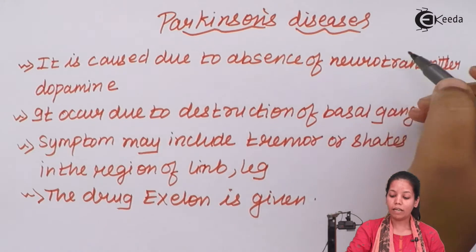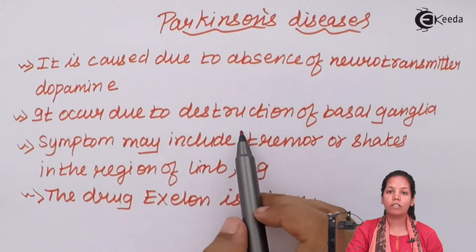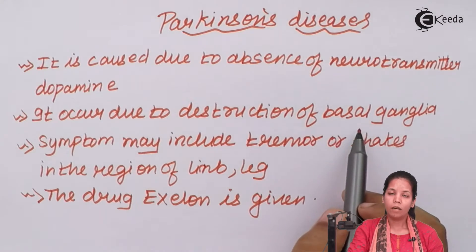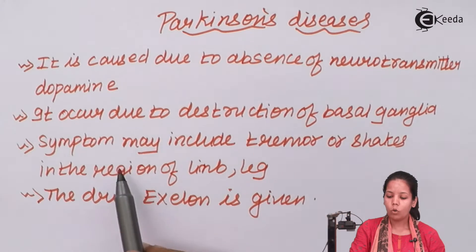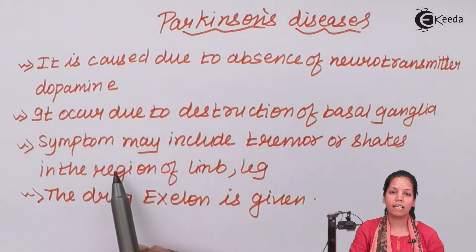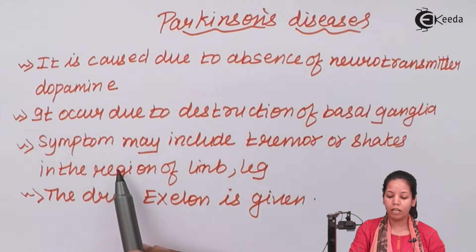Parkinson's disease occurs due to the destruction of the basal ganglia. Once dopamine quantity is reduced, signaling inside the body becomes very low.